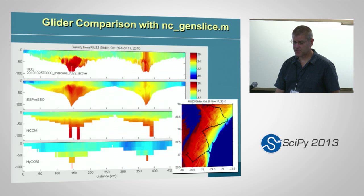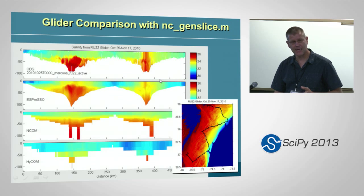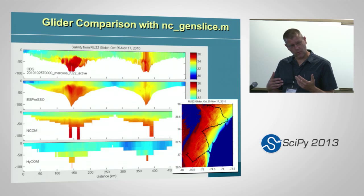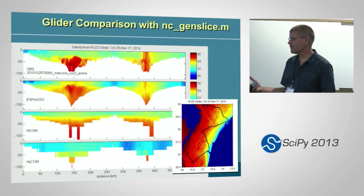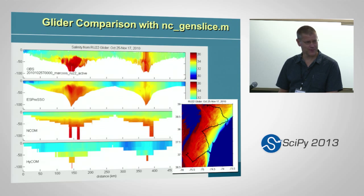We also have routines for things like a glider path going along the coast — an instrument going up and down through the water column. You can use a function inside the toolbox to slice through the data and take an arbitrary slice through these different models. This is great for MATLAB users — they love it. But it's sad to tell folks they have to use MATLAB in order to do this cool stuff, right? So we want to be able to do this in Python.